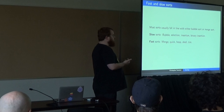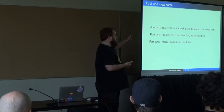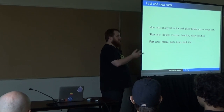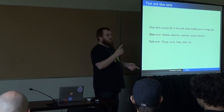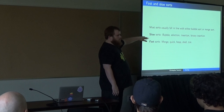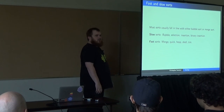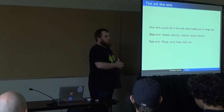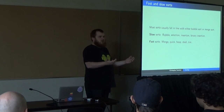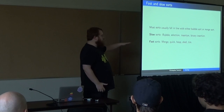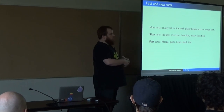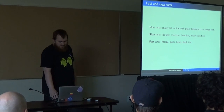Almost every sort falls into a category similar to bubble sort or merge sort. Bubble-sort-like algorithms — insertion sort, selection sort, binary insertion sort — are all O(n²) because they loop over nearly every pair of elements. The fast sorts — quick sort, merge sort, timsort — work by divide and conquer: break the problem into two halves, solve each independently, and combine them back. That's how almost all fast sorts work.